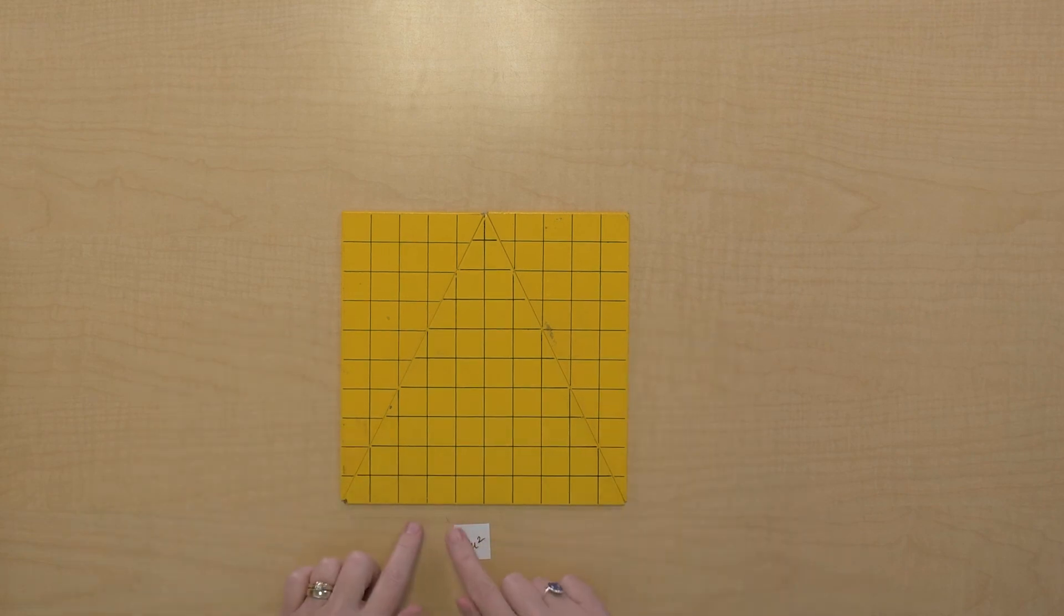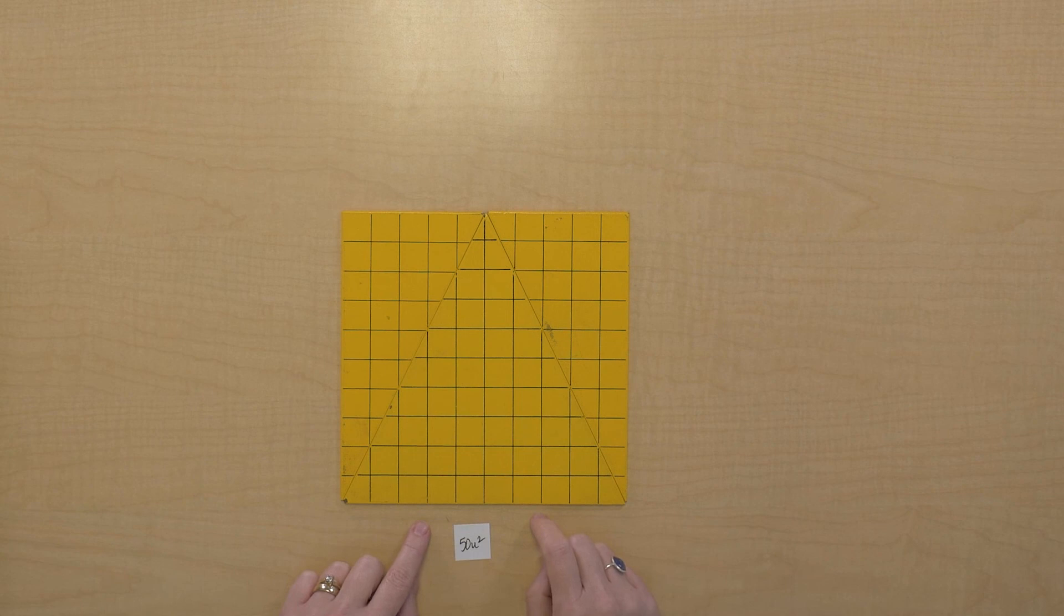So the only thing that we did is that we actually doubled the triangle, so that we needed to take the base times the height and then divide it by 2.